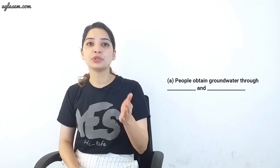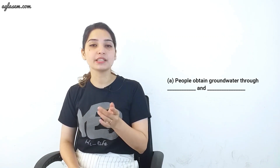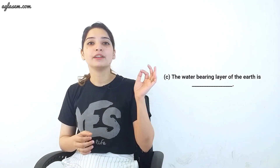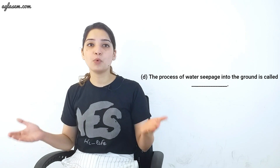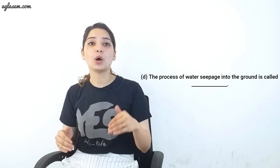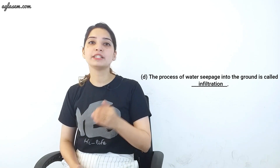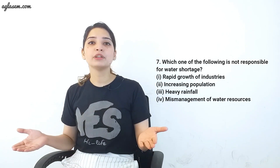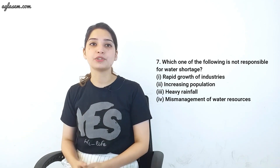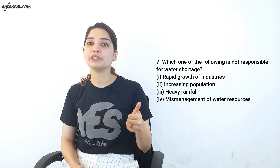Question 6: Fill in the blanks. (a) People obtain groundwater through wells and hand pumps. (b) Three forms of water are ice, water, and vapor. (c) The water-bearing layer of the earth is called the hydrosphere. (d) The process of water seepage into the ground is called infiltration.